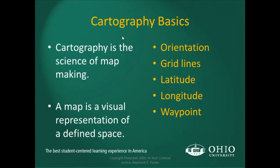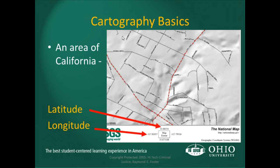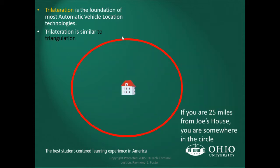Cartographic basics — cartography is the science of map making. A map is a virtual representation of a defined space. Maps typically have an orientation, grid lines, latitude, longitude, and waypoints or points of interest. Most information is referenced to a lat-long or some sort of reference system, whether it be a state plane reference system or others.